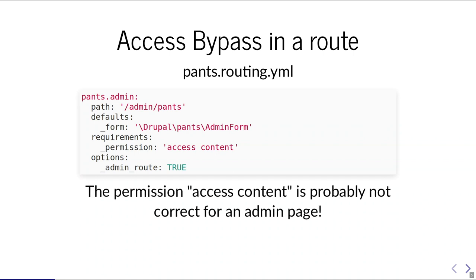We need to probably use some other permission there, like 'administer pants' if it's about the pants module. Some people also use 'administer site configuration', which is the very generic backend configuration permission in Drupal that is a bit overused. Better modules define their own admin permission and use that — don't use 'access content' for admin routes.